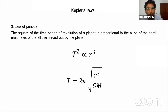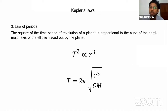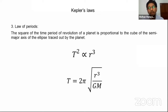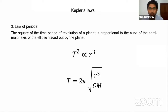Kepler's Third Law: the square of the orbital period is proportional to the cube of the semi-major axis. The equation is T = 2π√(r³/GM). This is how we calculate the time period for any planet or satellite orbiting a central body.